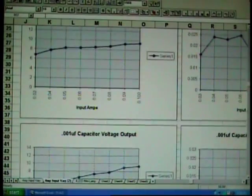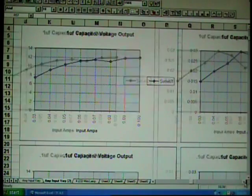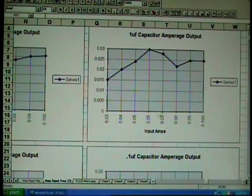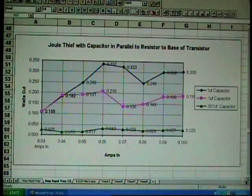I also want to mention, with all the capacitors, the voltage went up pretty smoothly as you increase amperage going in. The capacitor was changing mostly the amperage output. As amperage input increased, so did the amperage output until a certain point, and then it tapered off. That's all reflected in the watts output in the graph.